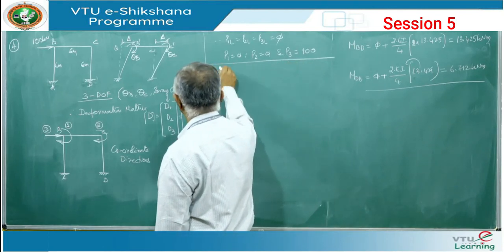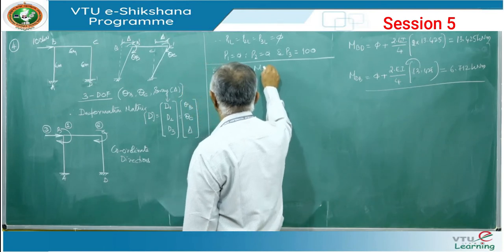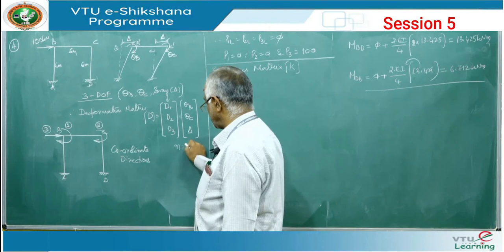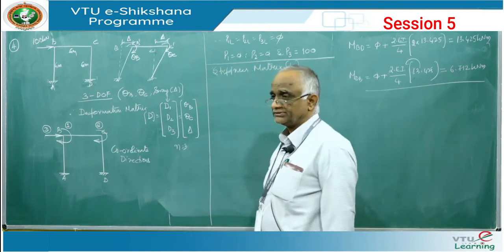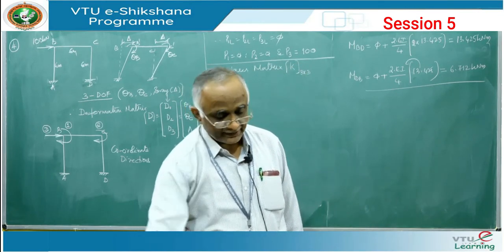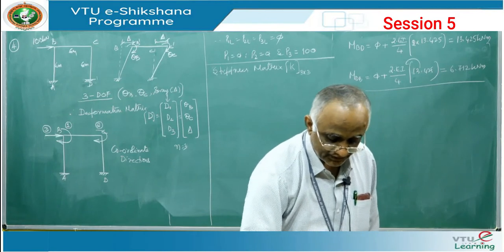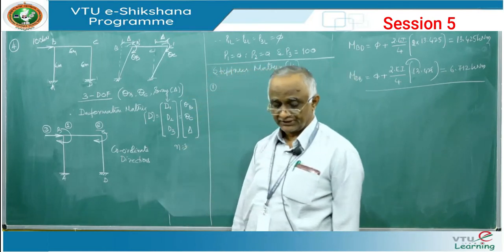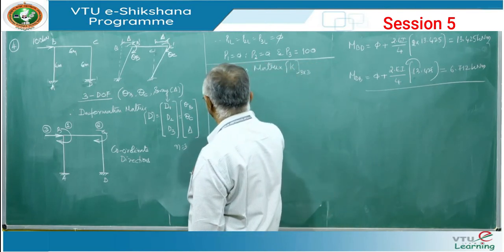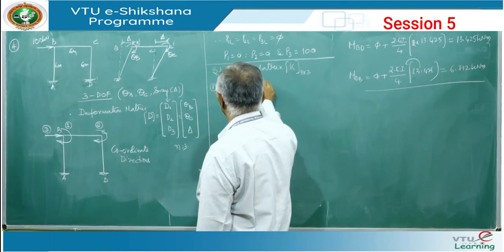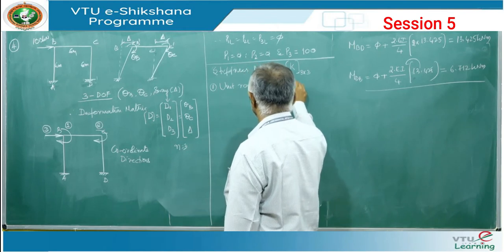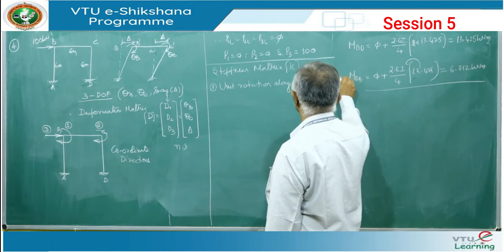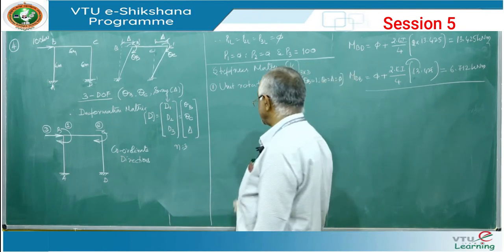Now we form the stiffness matrix K. With 3 degrees of freedom, N = 3, so K is 3×3 — requiring 9 elements across 3 columns of 3 rows each. To find the first column elements, we give unit rotation along coordinate 1, meaning theta_B = 1, while theta_C and delta equal zero. First, see that all joints are fixed, then give a clockwise rotation.